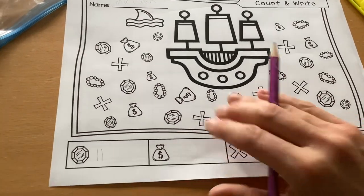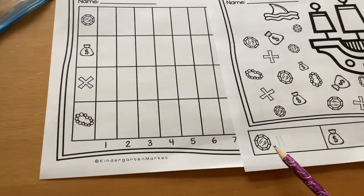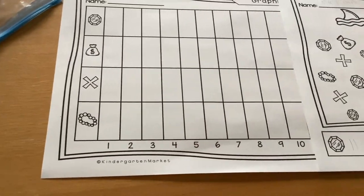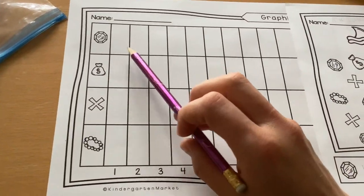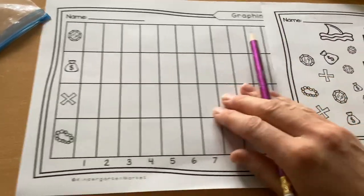Then you're gonna take your tallies and make it into a graph. So here's your window and whatever you got. Let's say it was seven—then you're gonna color it all the way to seven, color in the seven boxes. And then you're gonna keep on going.